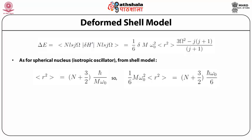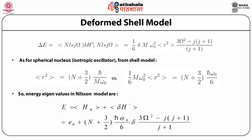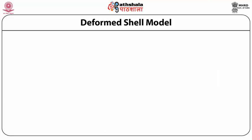So (1/6)Mω₀²⟨r²⟩ = (N + 3/2)ℏω₀/6. The complete energy eigenvalues in the Nielsen model are: E = E₀ + [(N + 3/2)ℏω₀/6]·δ·[3Ω² − j(j+1)] / (j+1), where the first term on the right is the energy of the spherical shell model and the second term arises from the deformation.